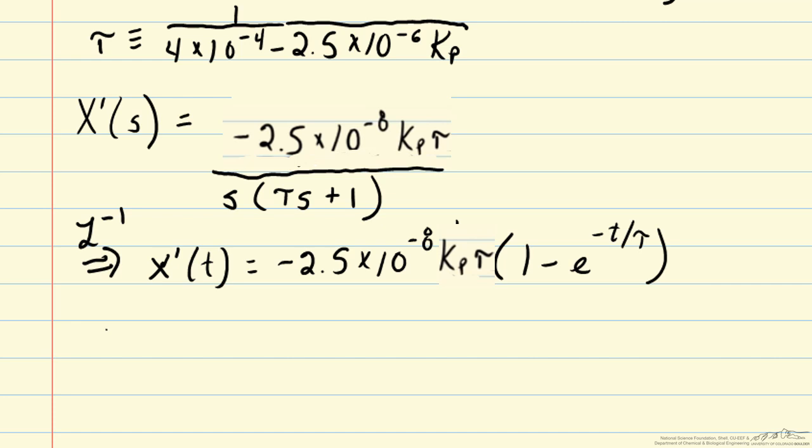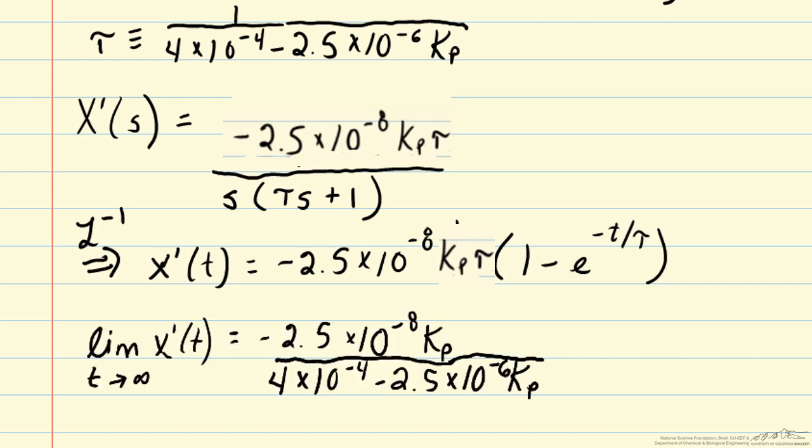We can also look at the long term behavior of the system. The long term behavior is going to depend on the value of Kp. If you remember, we want the system to track our set point. We want it to have a step change of 0.01.